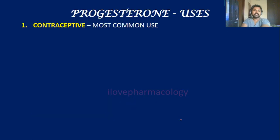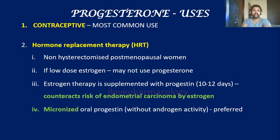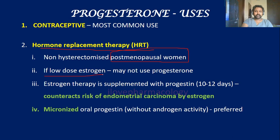The second use is as hormone replacement therapy, mainly in the case of non-hysterectomized postmenopausal women. If you are using a low dose estrogen for hormone replacement therapy, you may not need progesterone, because at low doses of estrogen there will not be any risk of estrogen causing endometrial carcinoma.